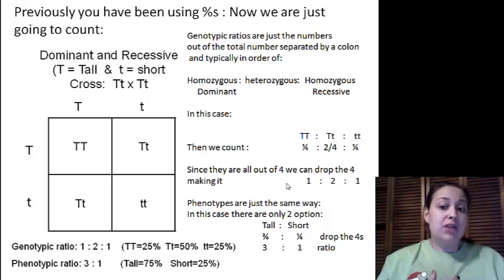How do you write ratios and make sure they're in the correct order? For dominant and recessive, you always do the homozygous dominant first. Then you do the heterozygous, which is the uppercase and then lowercase. And then we have the homozygous recessive, which is the two lowercase.